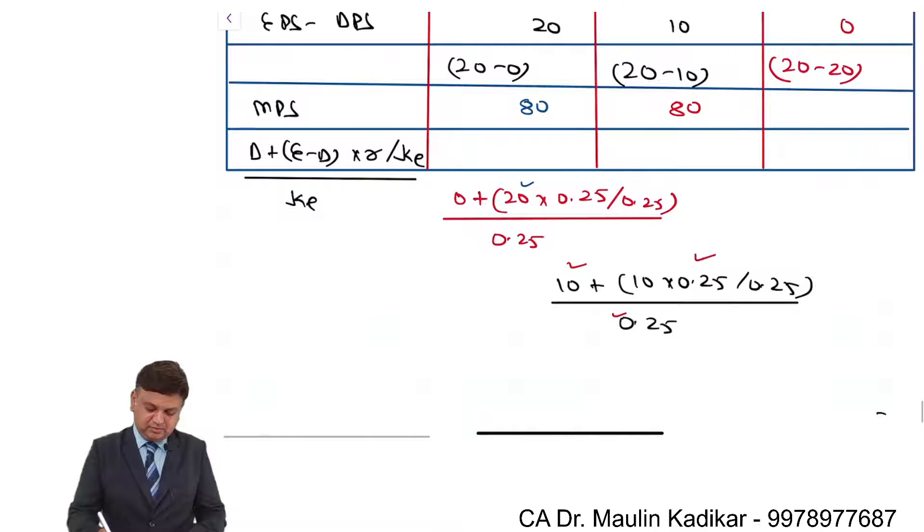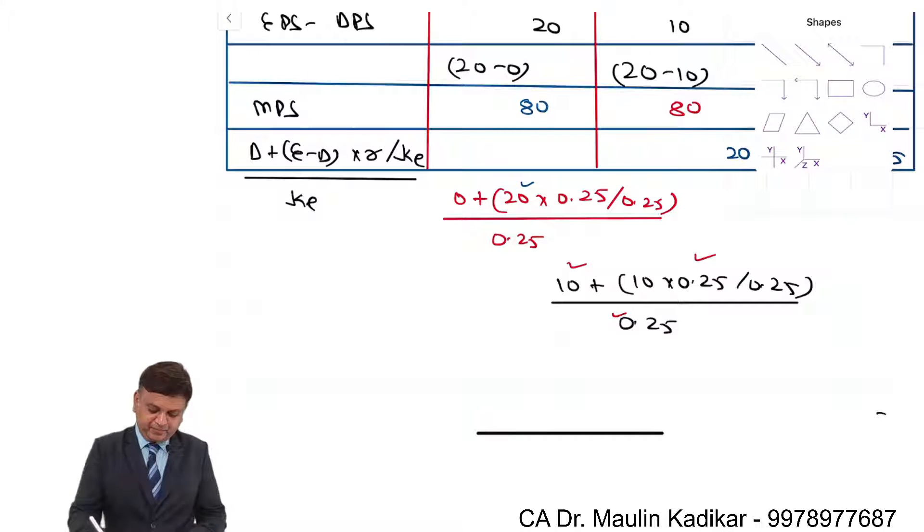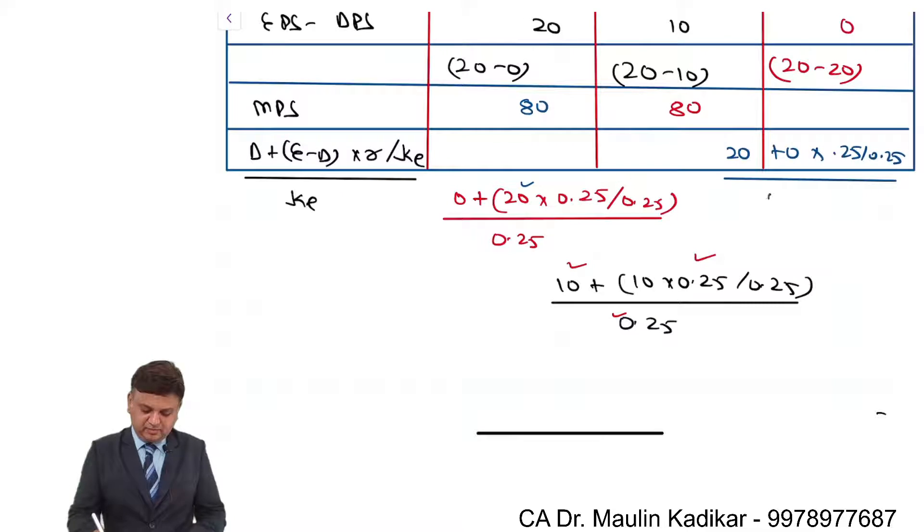So 20 divided by 0.25 divided by 0.25 divided by 0.25, that comes to 80 rupees.